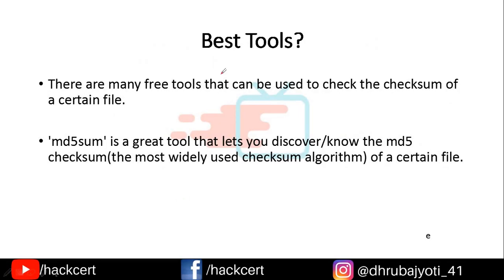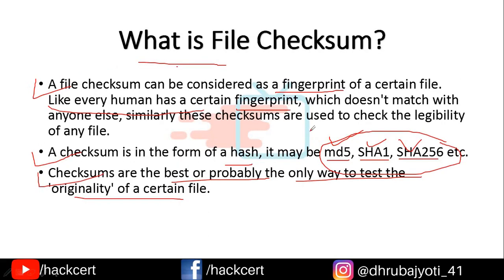So what are the best tools to test for the checksum of a certain file? There are many tools to check the checksum. As I said, MD5, SHA1, and SHA256 — there is rarely any one tool that can let you find all types of checksums. Generally, different algorithm checksums have different tools. MD5 is the checksum category that is most widely used. If you go and visit any official website when you want to download something, you will find the MD5 checksum available there — there is a 90 to 95% probability.